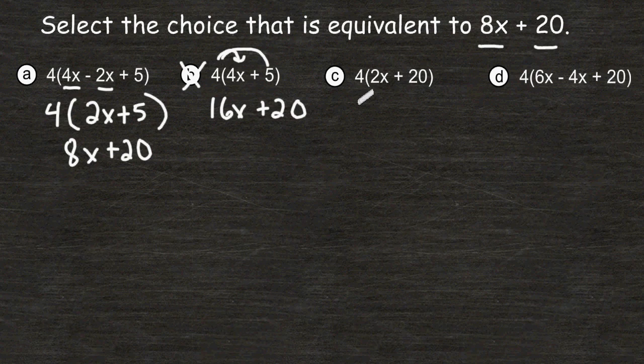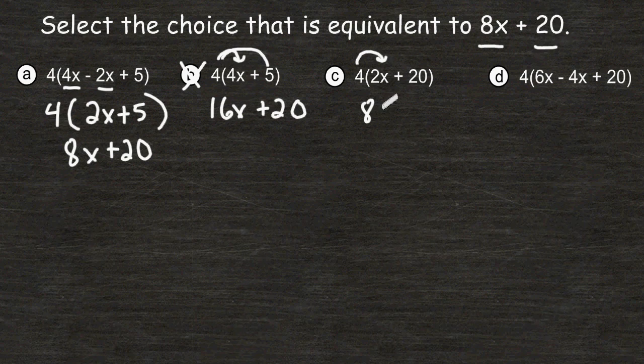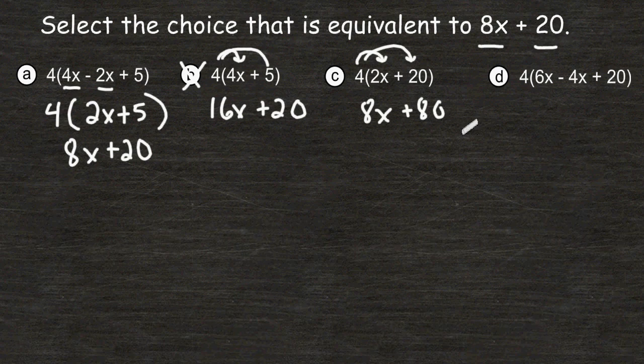For choice C, we're going to multiply 4 times 2x, which is 8x, and 4 times 20, which is 80. And that is not equal to 8x + 20.